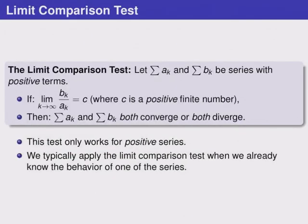Our next test, the limit comparison test, requires two series called a_k and b_k. These series must have positive terms. For our hypotheses, if we calculate the limit as k goes to infinity of b_k over a_k, that is, a general term in series b over a general term in series a, and we get a number c, which is positive and finite, then the two series, a_k and b_k, either both converge or they both diverge. In other words, they have the same behavior.